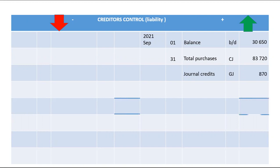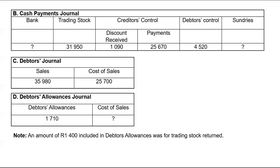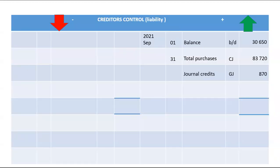Creditors control will decrease when we pay. Payments are recorded in our cash payment journal. Go to the cash payment journal, look for your creditors control column — you'll notice it's split into two: discount received and payments. You add the two amounts and put them under bank and discount received on the debit side of creditors control. That combined amount comes to 26,760.